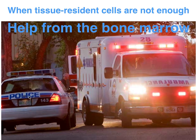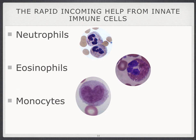Interferon alpha and beta upregulate antiviral mechanisms in healthy cells. When the alarm systems, together with the tissue resident immune cells, are overwhelmed and need more help, they can get help from bone marrow-derived cells. They make a call to the bone marrow. What is in the bone marrow? Neutrophils, eosinophils, and monocytes, which we're going to discuss now.